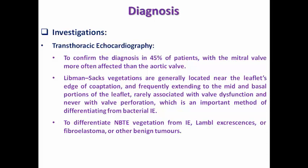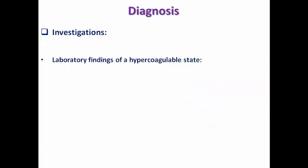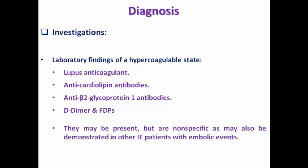Echocardiography is helpful to differentiate non-bacterial thrombotic endocarditis vegetation from infective endocarditis, Lambl's excrescences, fibroelastoma, or other benign tumors. Transesophageal echocardiography is essential due to its higher sensitivity, specificity, and negative predictive value compared to transthoracic echo — so both are required. Laboratory findings of a hypercoagulable state should be checked, including lupus anticoagulant, anticardiolipin, anti-beta-2 glycoprotein-1 antibodies, D-dimer, and fibrin degradation products, though these are not specific to this condition.